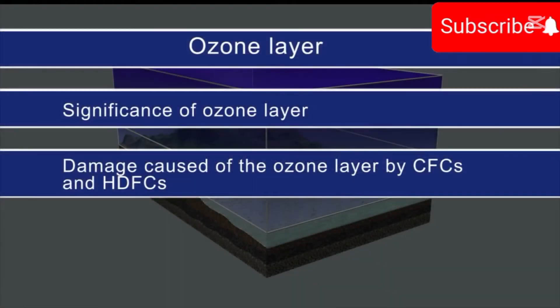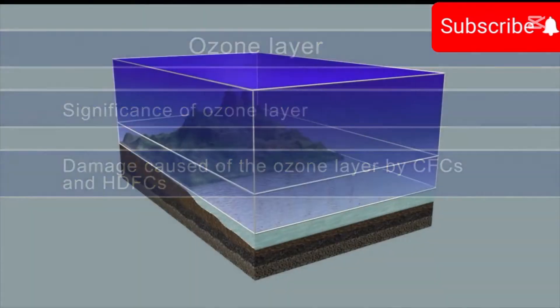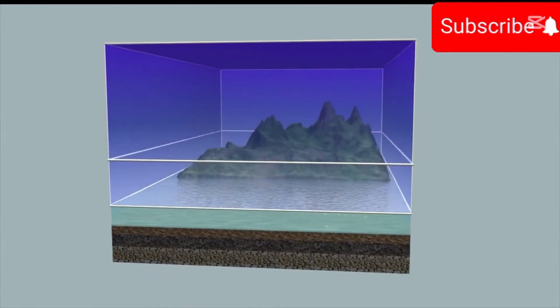In this topic, we will learn about the significance of the ozone layer and damage caused to the ozone layer by CFCs and HCFCs. The Earth's atmosphere is divided into several regions.